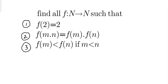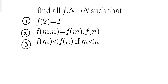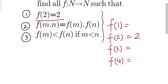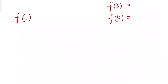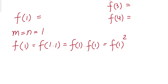We'll try to find all the values of this function using all the properties. Let's find f(1). To find f(1), we'll use the second property. Let's take both m and n equal to 1. Then we'll have f(1·1) = f(1)·f(1), which means f(1) = f(1)².